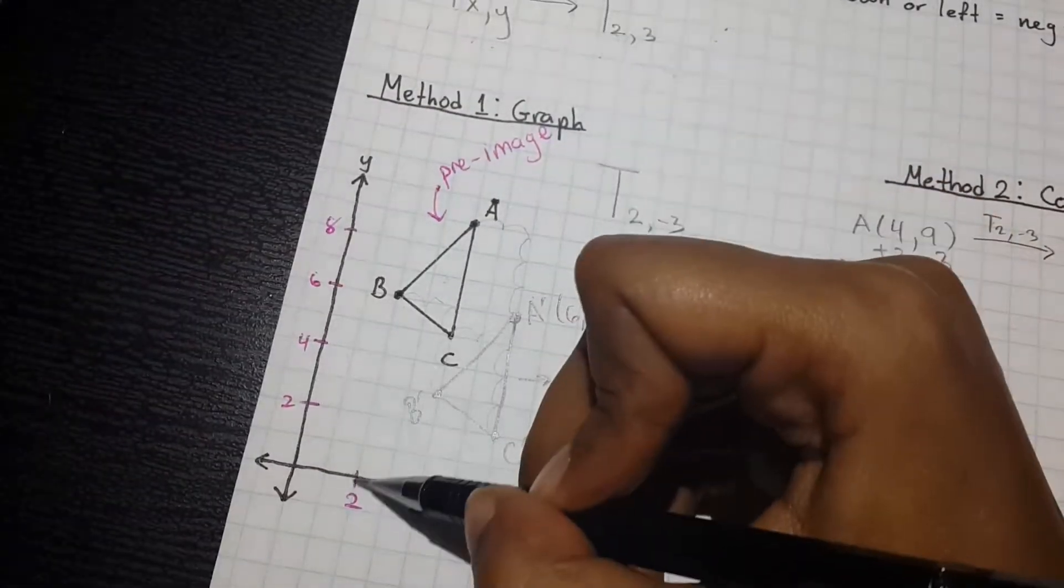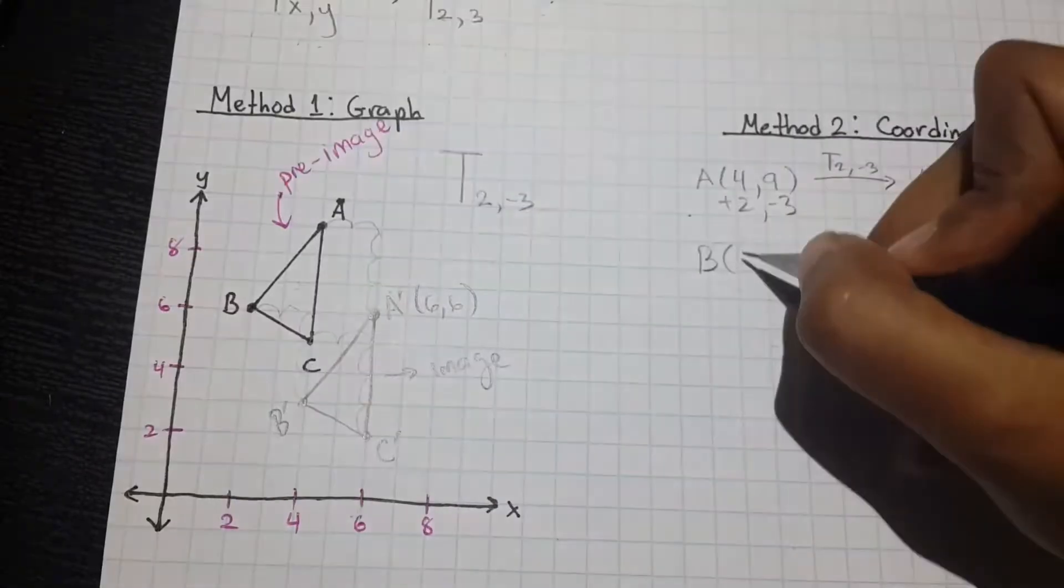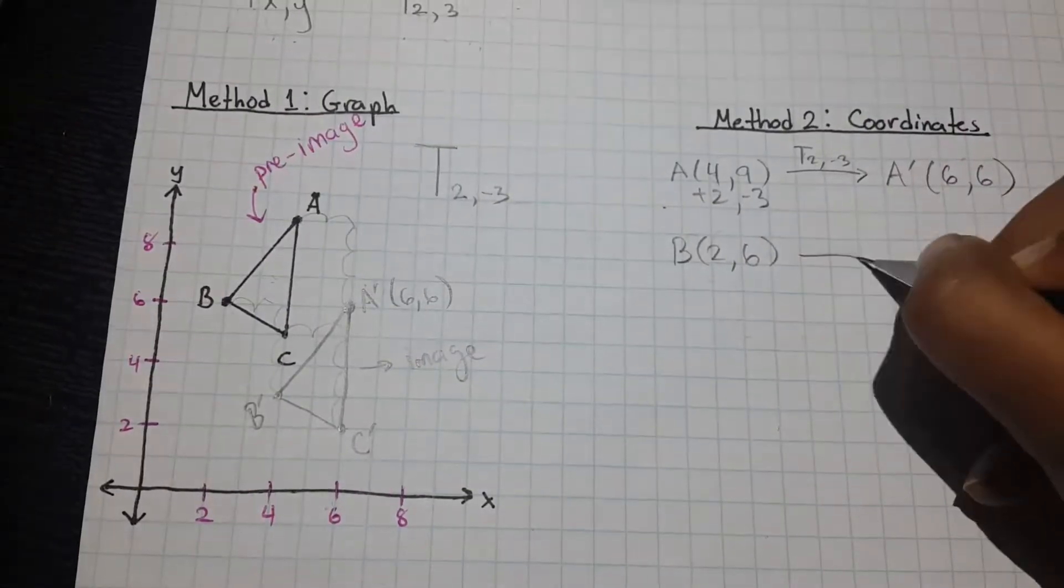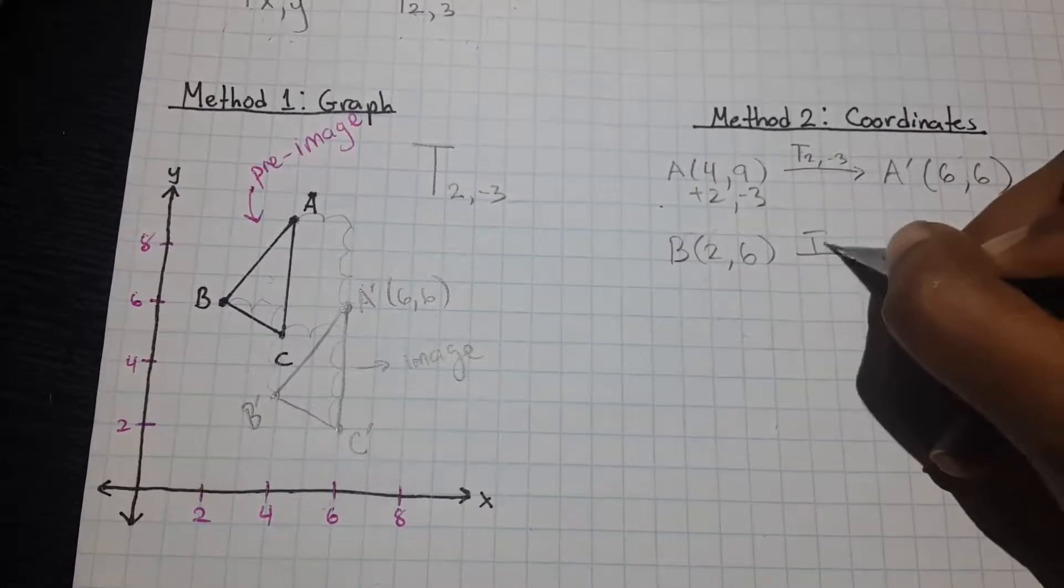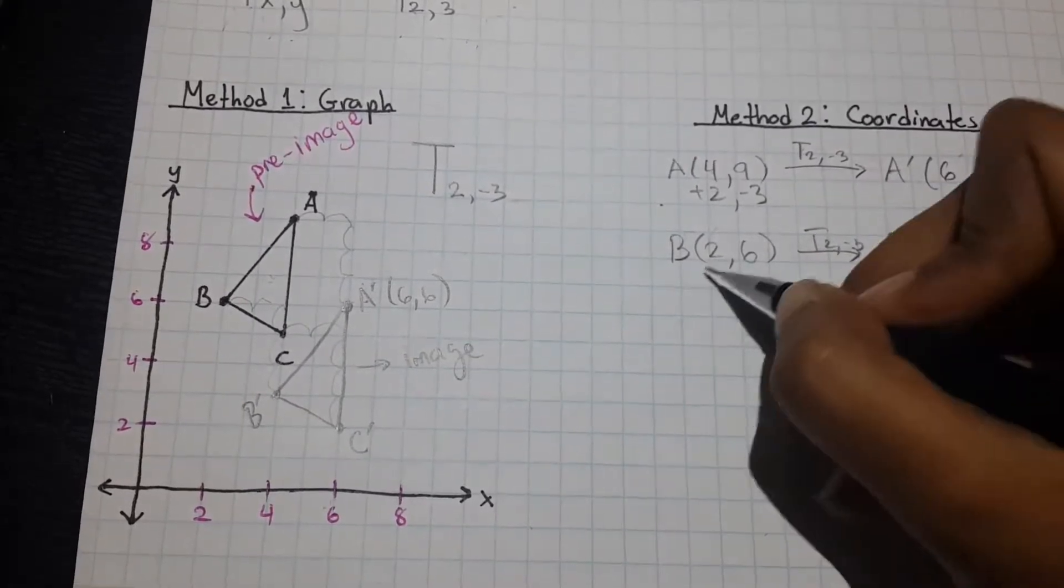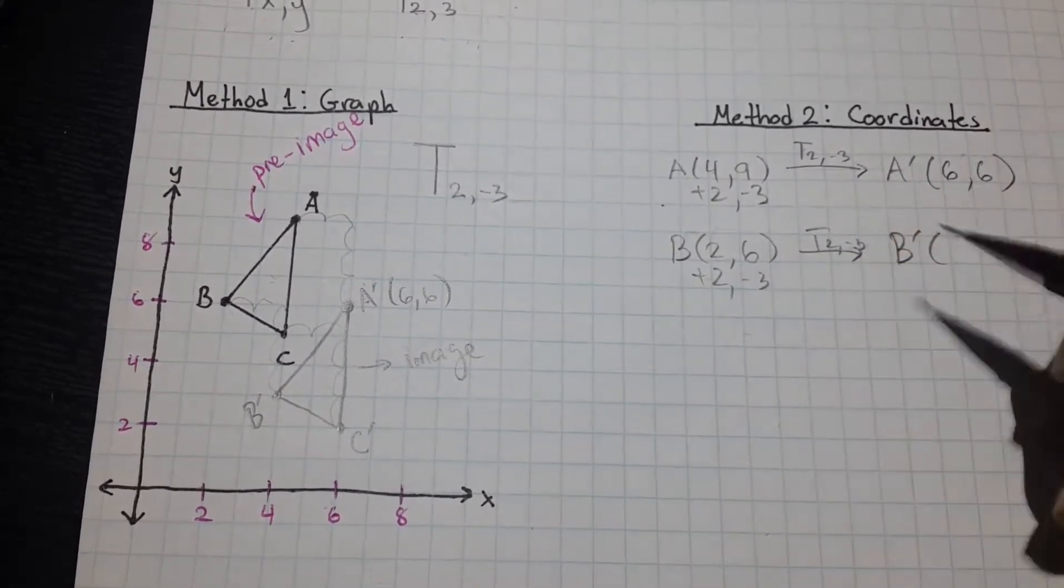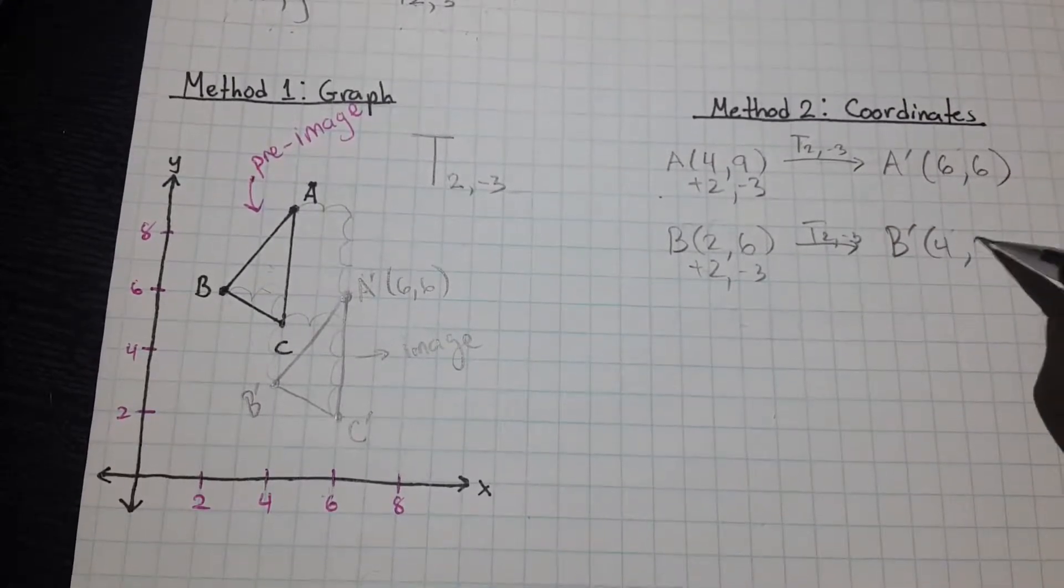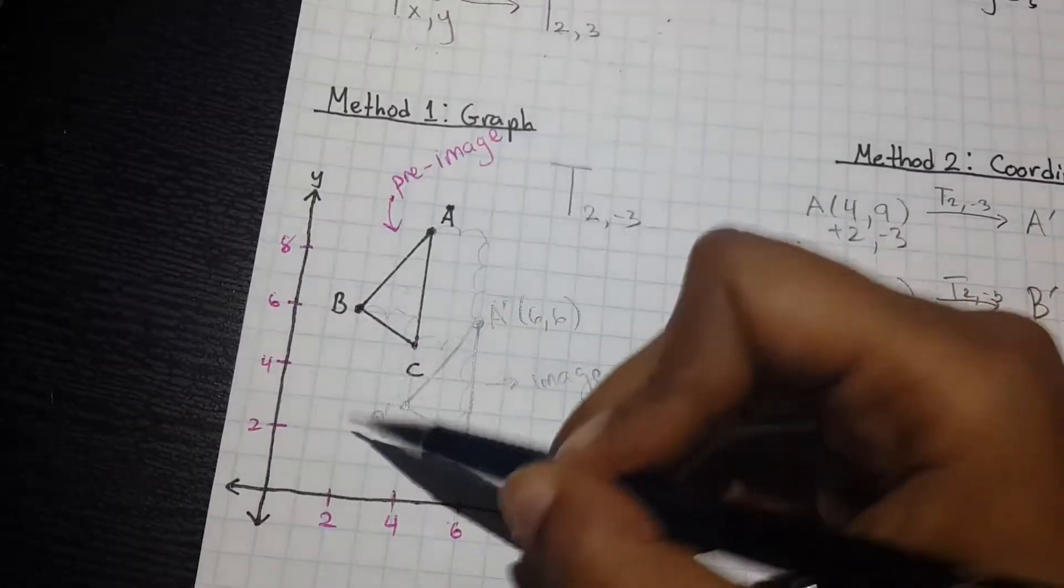So, let's do it again for B. B is (2,6). Performing the same translation. B prime is going to be plus two, minus three. So, that's going to be (4,3). Four comma three, good.